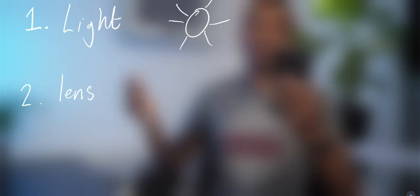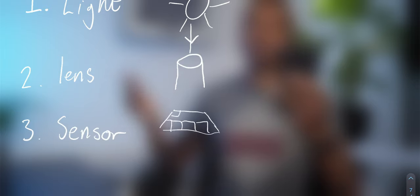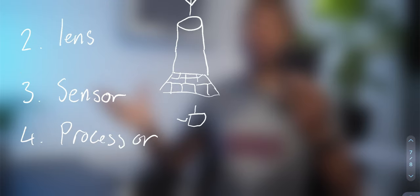To summarise: the foundation of any image is the light. The quality of the light will determine how natural or realistic the colours look, as our eyes have adapted to sunlight. The next step is to capture light — that's done with the lens, where we can adjust the field of view and depth of field. Finally, the sensor converts that light into a signal, which is then processed into an image or video file.